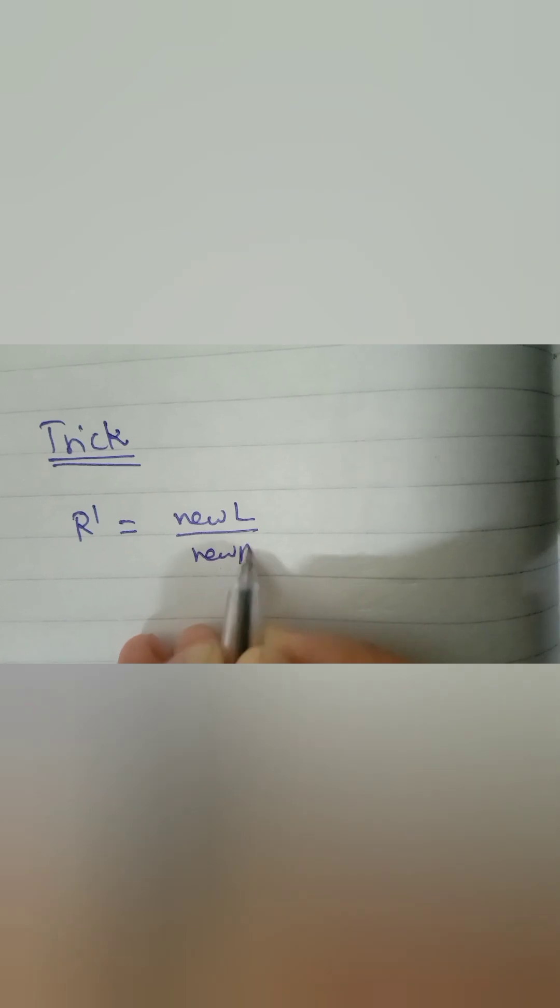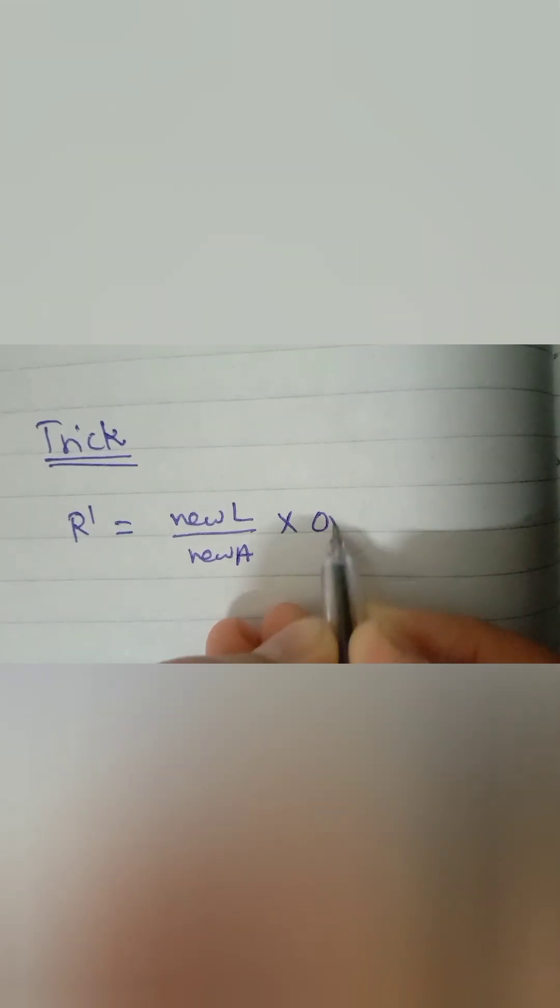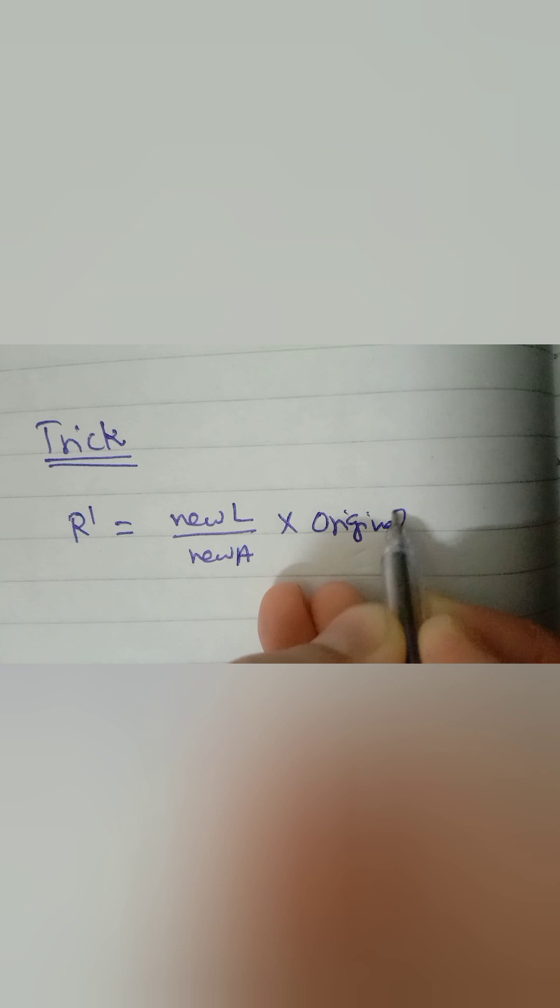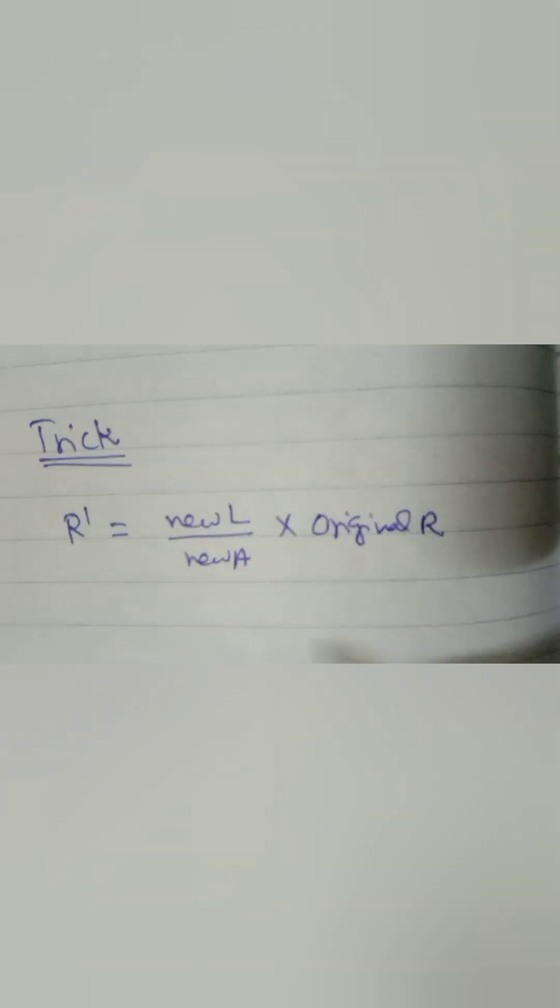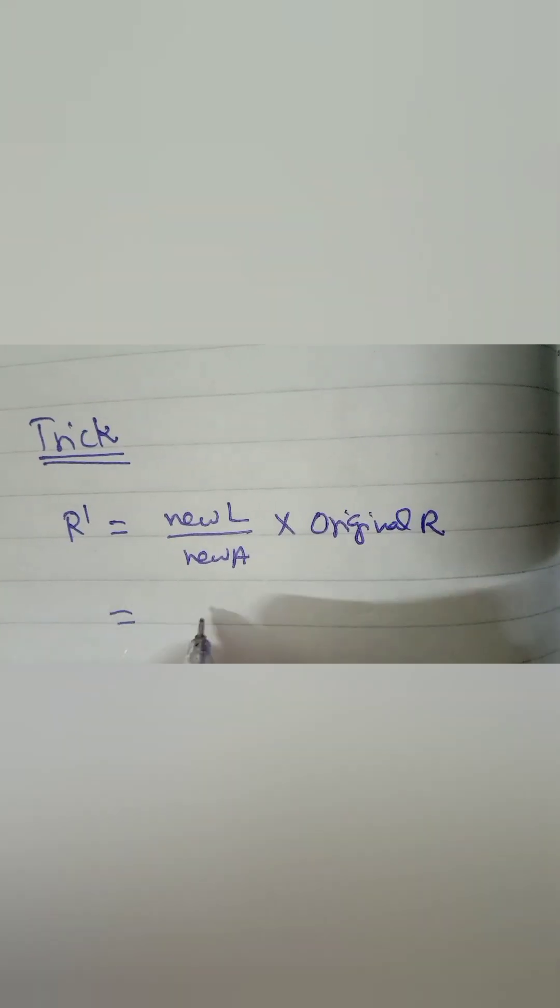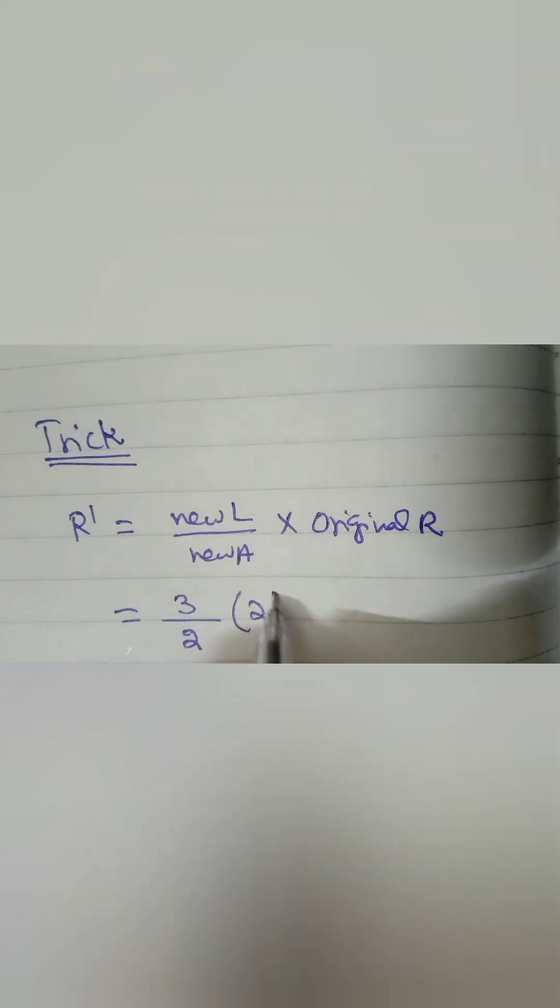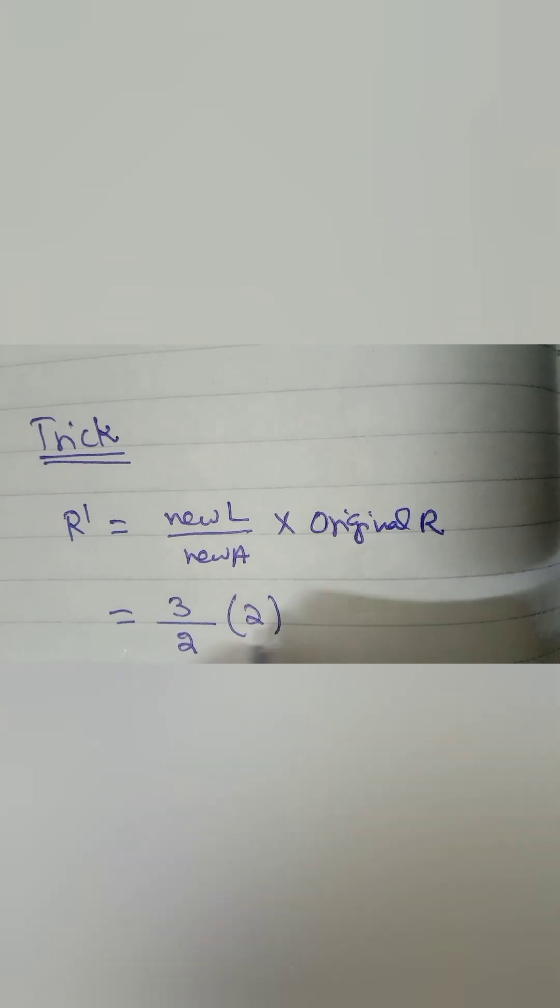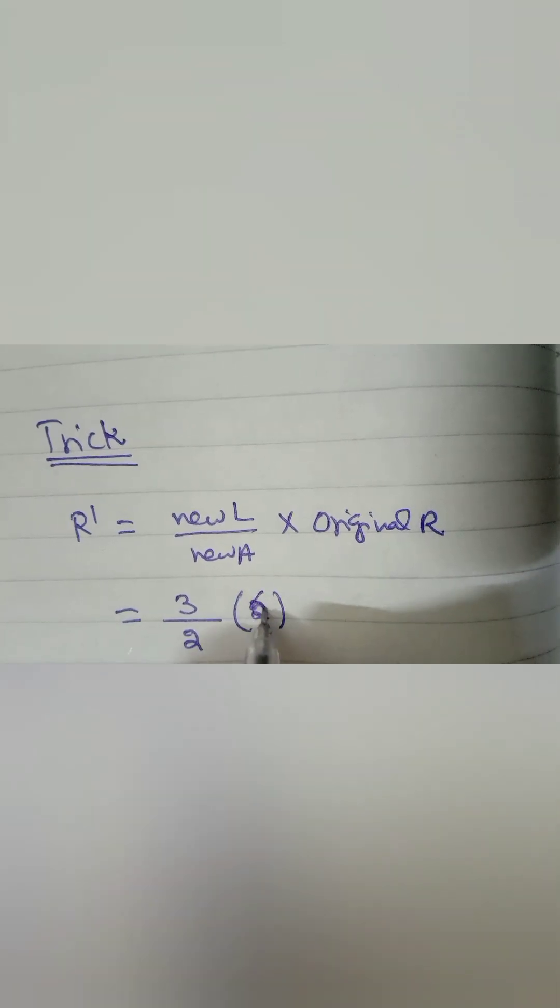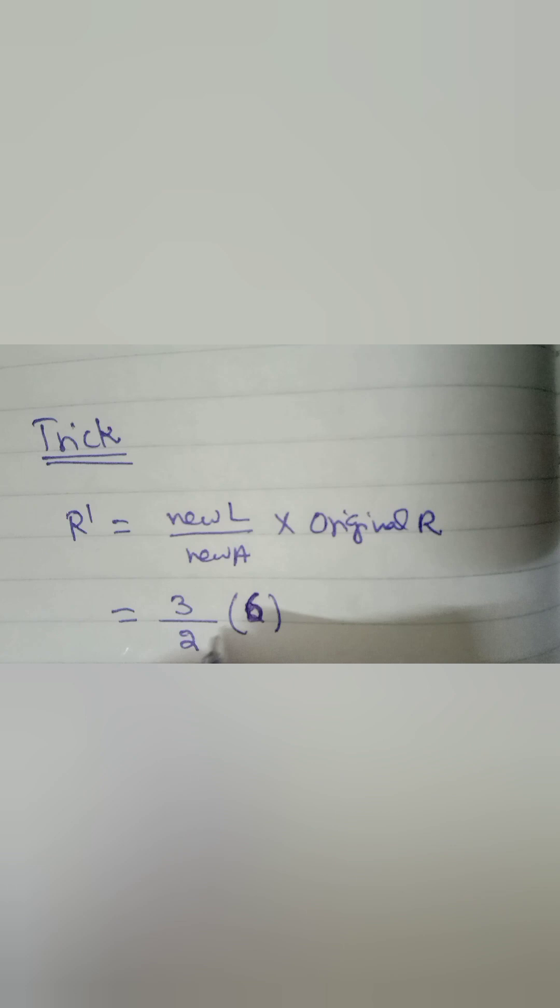So our new resistance will equal your new length divided by new area into the original resistance. Just put in the values. In our previous question we saw that new length was three times the original length and area was two times.